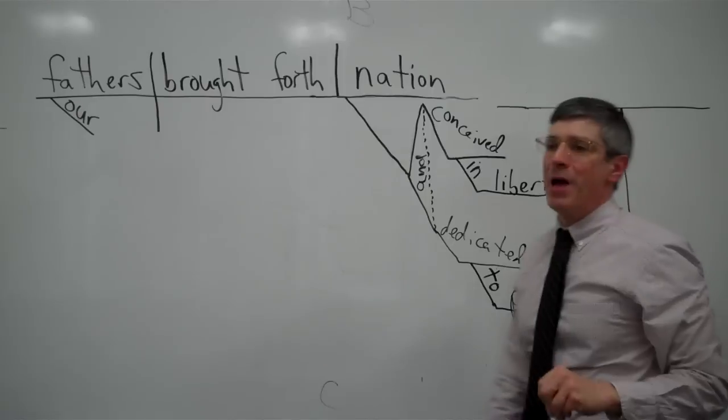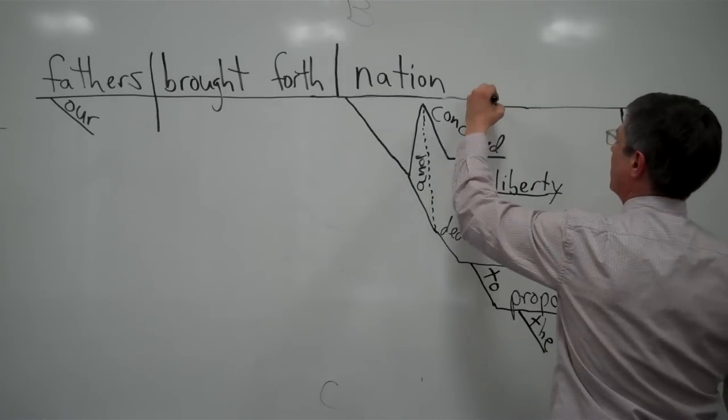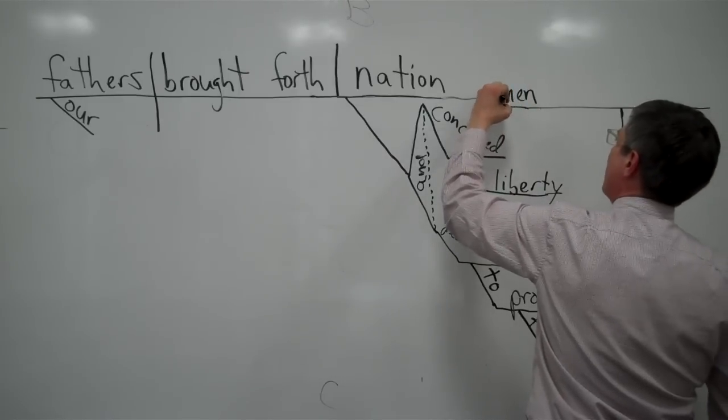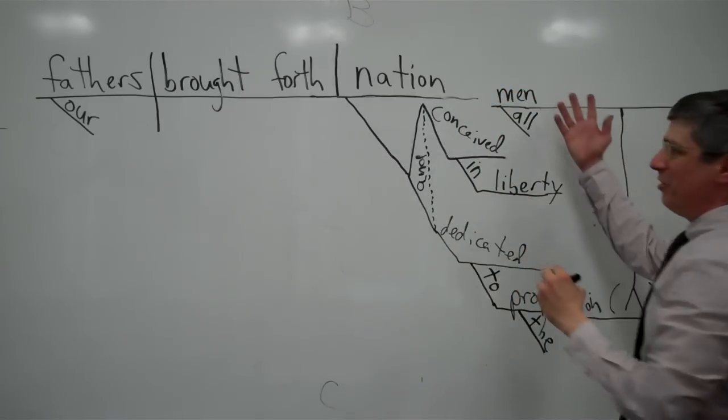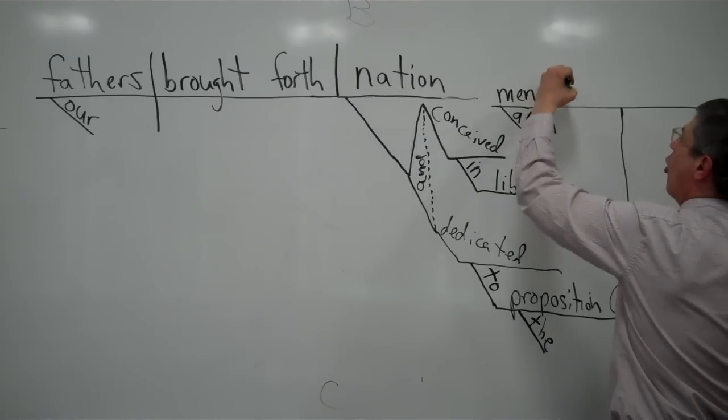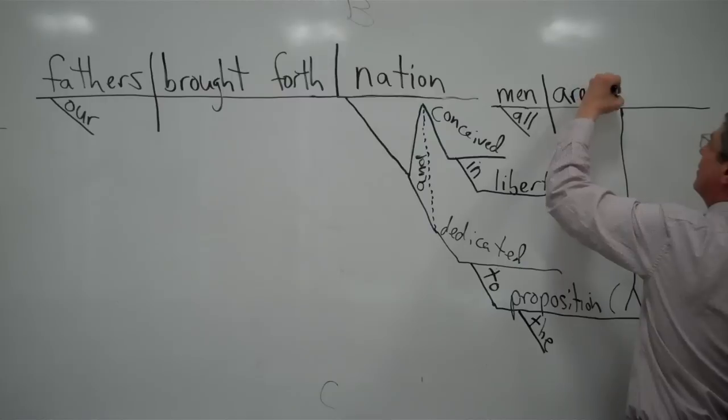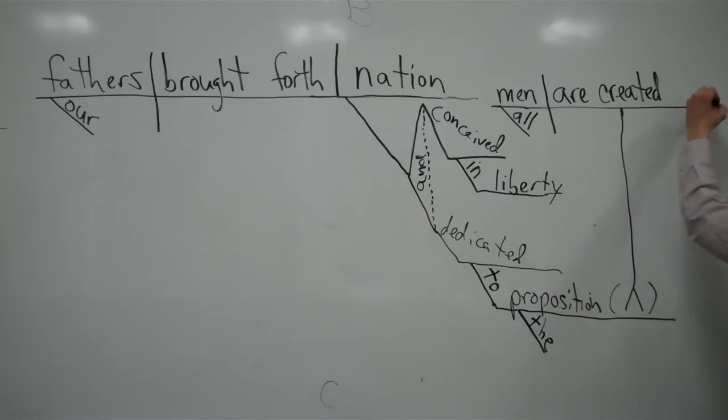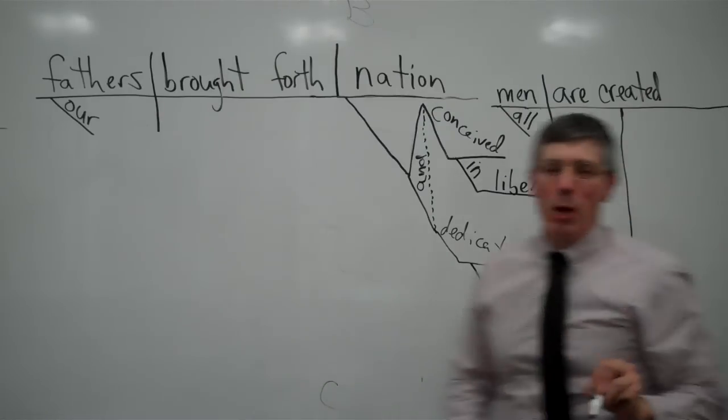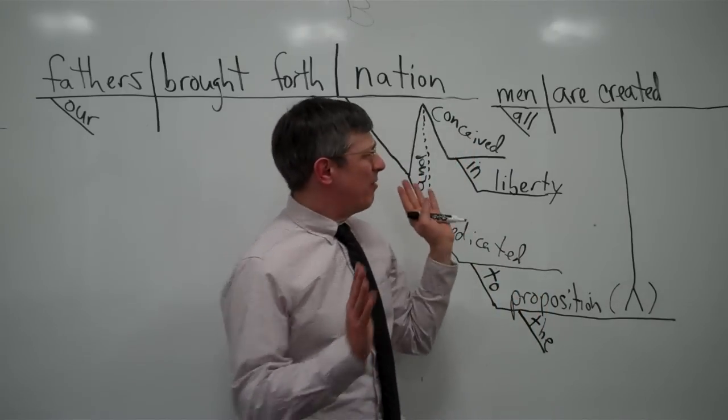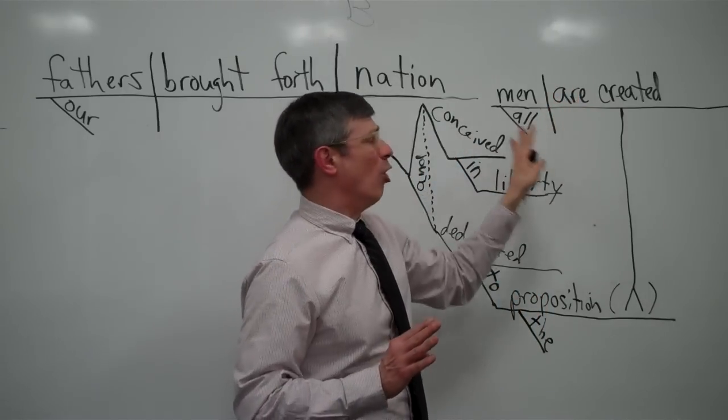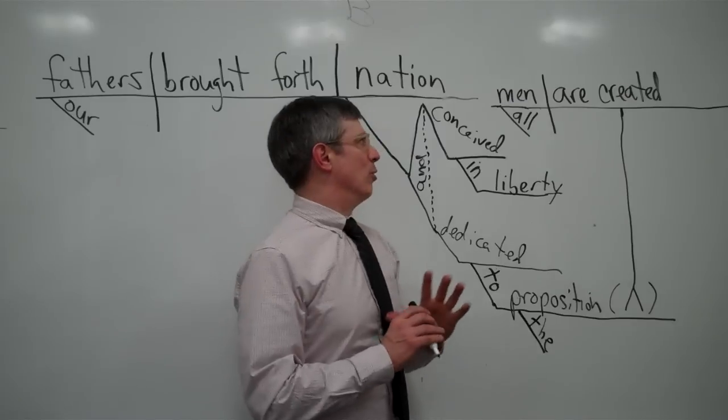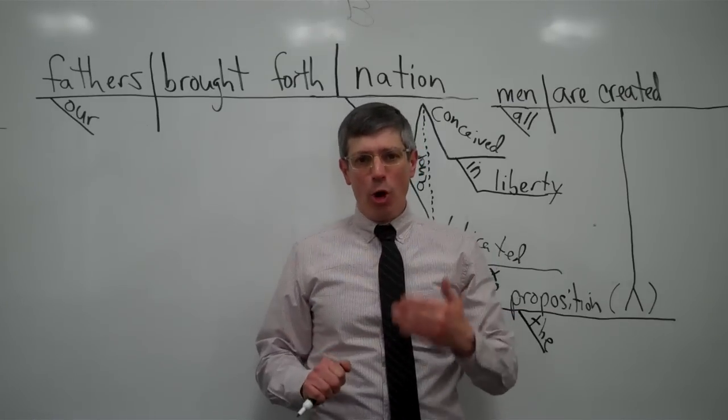So the proposition is that all men are created equal. Boy, I hope this all fits. So, men. Which men? All men. So men is the subject. All men. All men are created. Now, what I would do. We're really coming right to the edge here. What I would do here now. If, now this is in the passive voice. All men are created. If this were in the active voice and it were, say, God created all men equal. We would have this situation. He created. And then men would be the direct object.